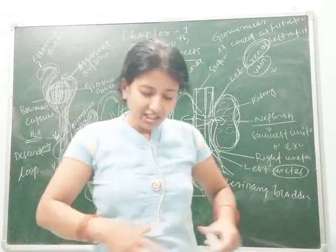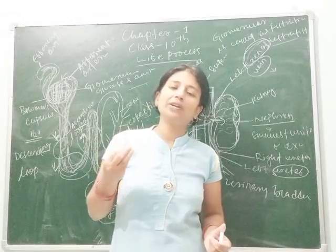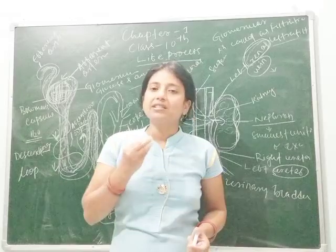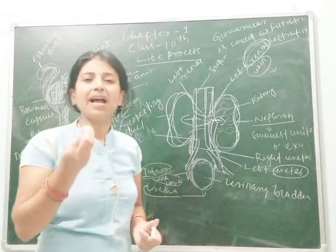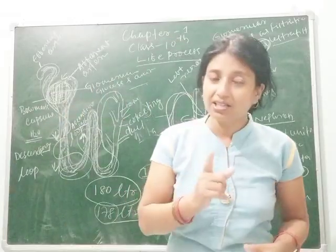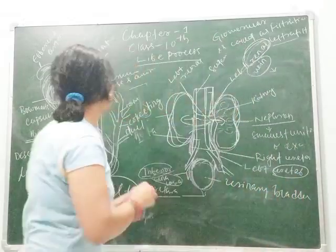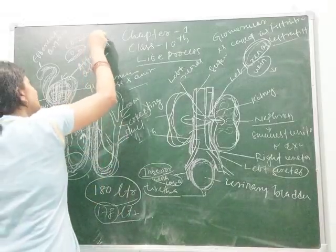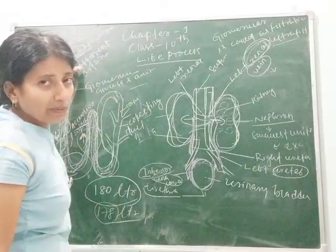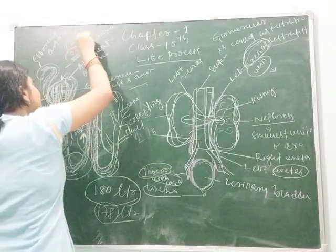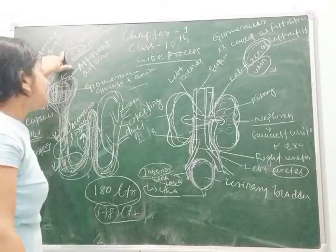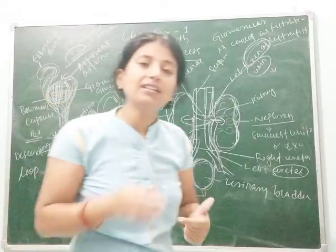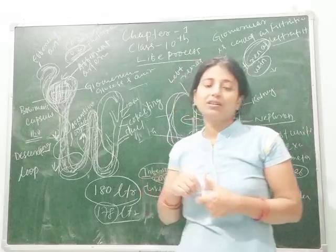Gum or gond released by plants is also an excretory product. Some long-lived plants release black-colored substances into the soil, which are also excretory products. Most importantly, oxygen is the excretory product of plants during photosynthesis, and carbon dioxide is the excretory product during respiration, since CO2 is released by plants during respiration and O2 is released during photosynthesis.